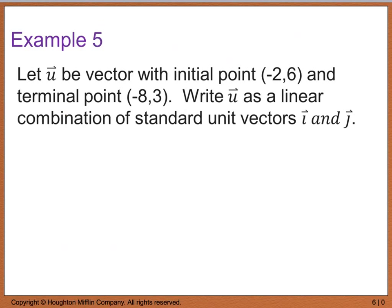So example 5 says to let vector U be a vector with an initial point negative 2, 6 and a terminal point at negative 8, 3. We want to write vector U as a linear combination of standard unit vectors I and J. So the first thing we have to do is we actually have to find vector U. And vector U is going to be found by taking our terminal point and subtracting it from our initial point. So I really have negative 8 minus a negative 2, which gives me negative 6, and I have 3 minus 6, which is a negative 3. So now if I want to write this as a combination of standard unit vectors, all I have to do then is break this down so that I end up with a negative 6 I plus, or I guess minus, minus 3 J. And this right here then is my linear combination of standard unit vectors in the I and J directions.